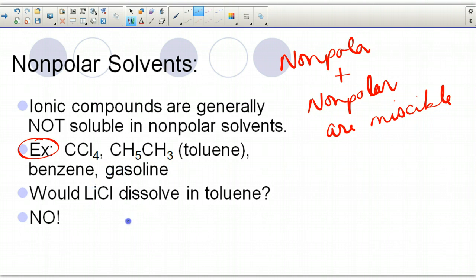It's important to note that if you have an ionic compound, they are generally not soluble in a non-polar solvent. If you tried to dissolve lithium chloride, which is ionic, in toluene, which is non-polar, it would not work. Ionic compounds do not dissolve in non-polar solvents.